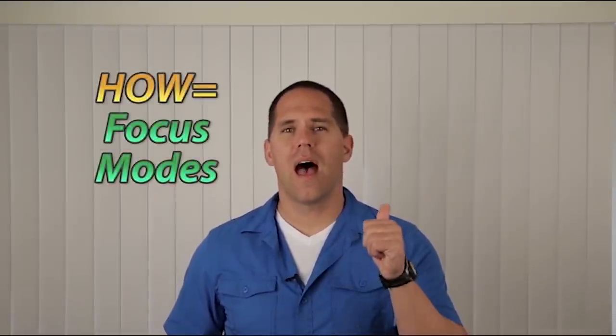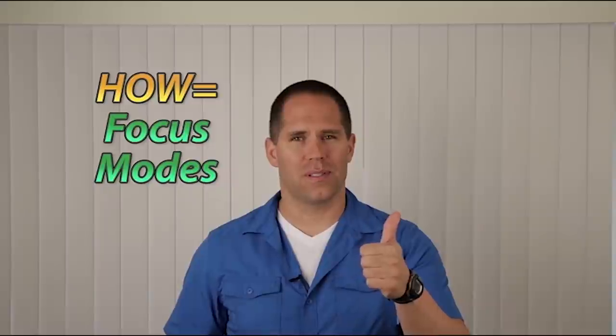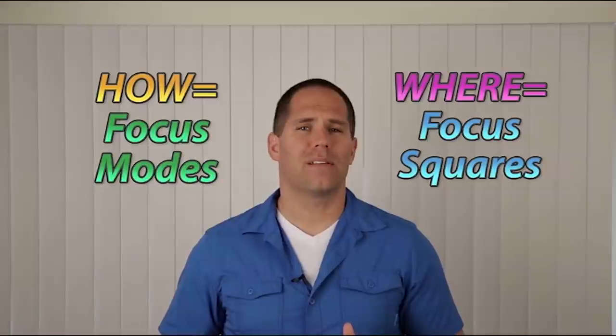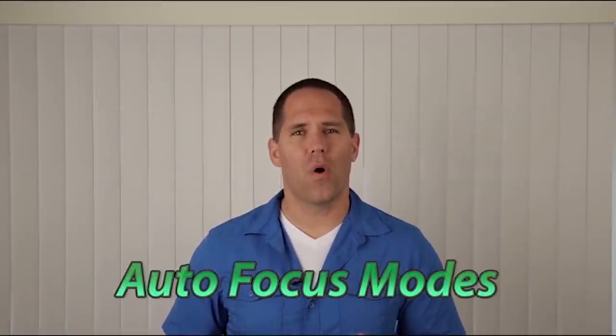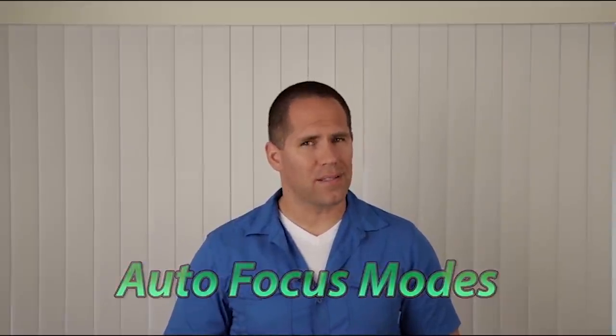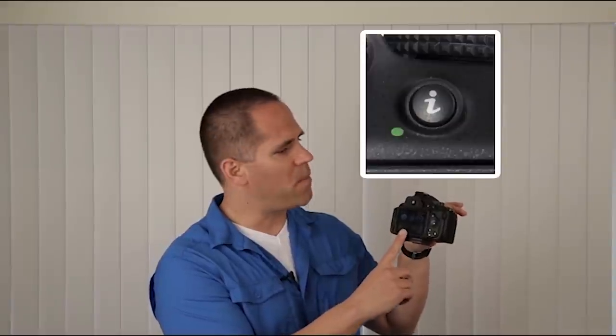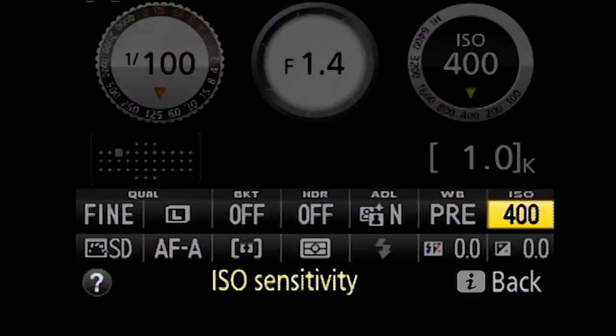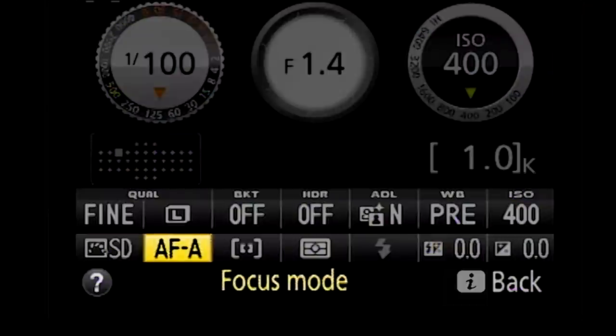In order to simplify things I've broken this down into the how the camera focuses and the where the camera focuses. The first thing I'd like to talk about is the how, and this is also the autofocus modes. To access your autofocus modes, if you have your information panel on the back of your camera, we're going to push the I button and we'll get this yellow highlight.